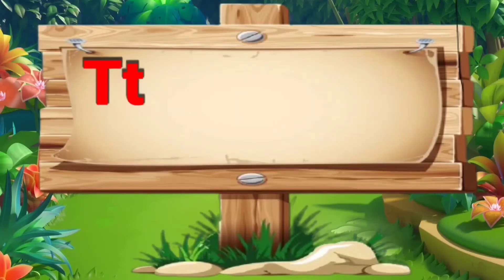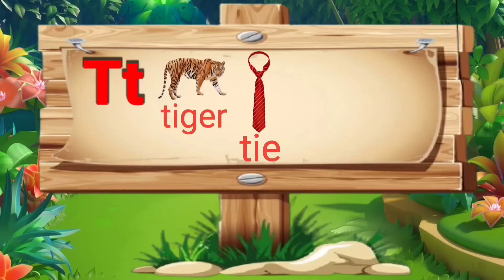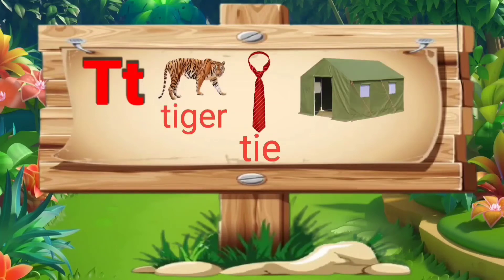T. T for tiger: T, I, G, E, R — tiger. T for tie: T, I, E — tie. T for tent: T, E, N, T — tent.